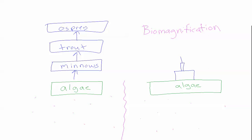This is the food chain that we've already talked about. Our aquatic food chain, our lake ecosystem food chain. The producers are algae, then followed by minnows, trout, and osprey.